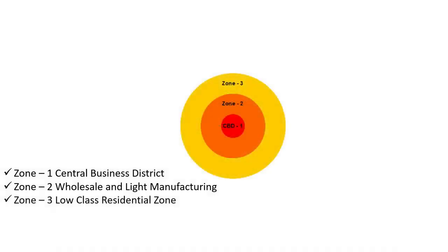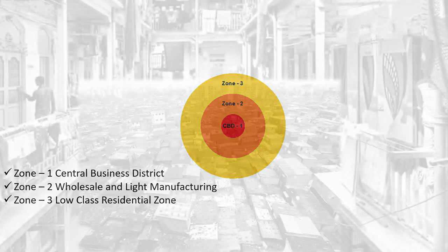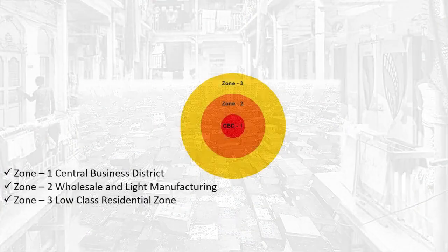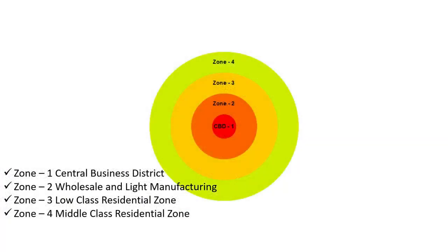Zone Three: Low Class Residential Zone. Here, workers working in the light manufacturing industries in Zone Two, who need to stay close to their working place, reside. There are moderately developed housing societies. People here stay in chawls or slums.